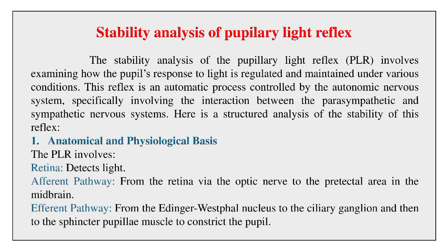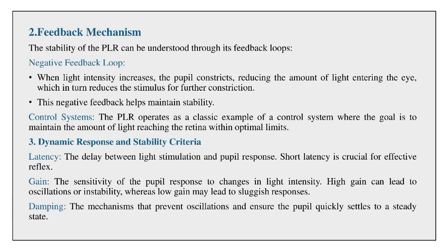Anatomical and physiological basis: The PLR involves the retina detecting light via the afferent pathway — from the retina through the optic nerve to the pre-tectal area in the midbrain — and the efferent pathway from the Edinger-Westphal nucleus to the ciliary ganglion and then to the sphincter pupillae muscle to constrict the pupil.